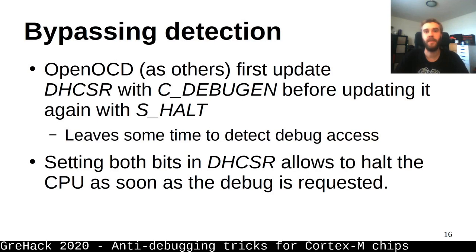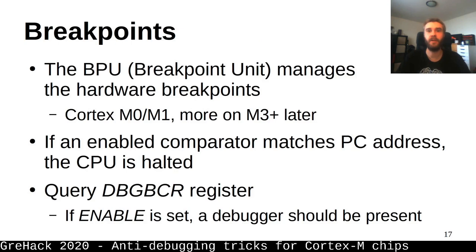But there is a way to manually set both debug-enable and halt request in the same write, bypassing this kind of detection. For the next technique, we'll try to detect if a debugger has set hardware breakpoints within our code. We need to understand how the core handles hardware breakpoints. There is a BPU, or Breakpoint Unit, available on Cortex-M0s and M1s, and a different unit for Cortex-M3 and above. This BPU works with a set of comparators — if you set a specific value in a comparator and the program counter equals that value, the core is automatically halted and a debug event is fired. The BPU has to be enabled globally before use, so you can check the BPU enabled bit to verify no breakpoint is active.